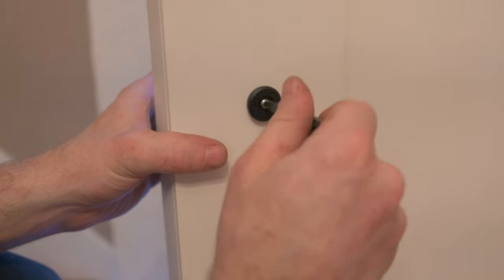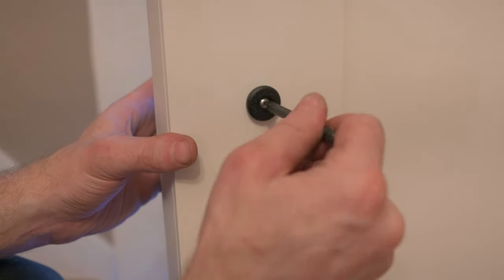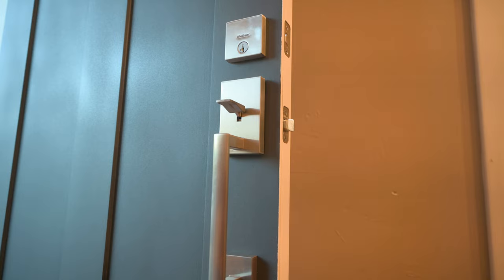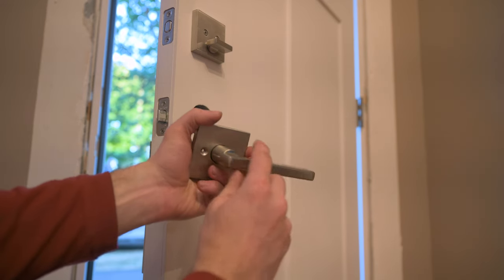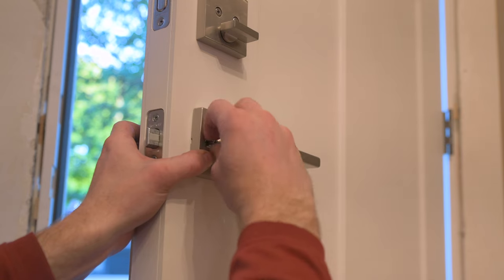Now we'll secure the bottom of the handle with this plastic washer and long screw. And don't make it too tight yet because we want to make sure that the handle is nice and parallel with the edge of the door. And that's already looking really good. Now we'll put this beautiful handle in.